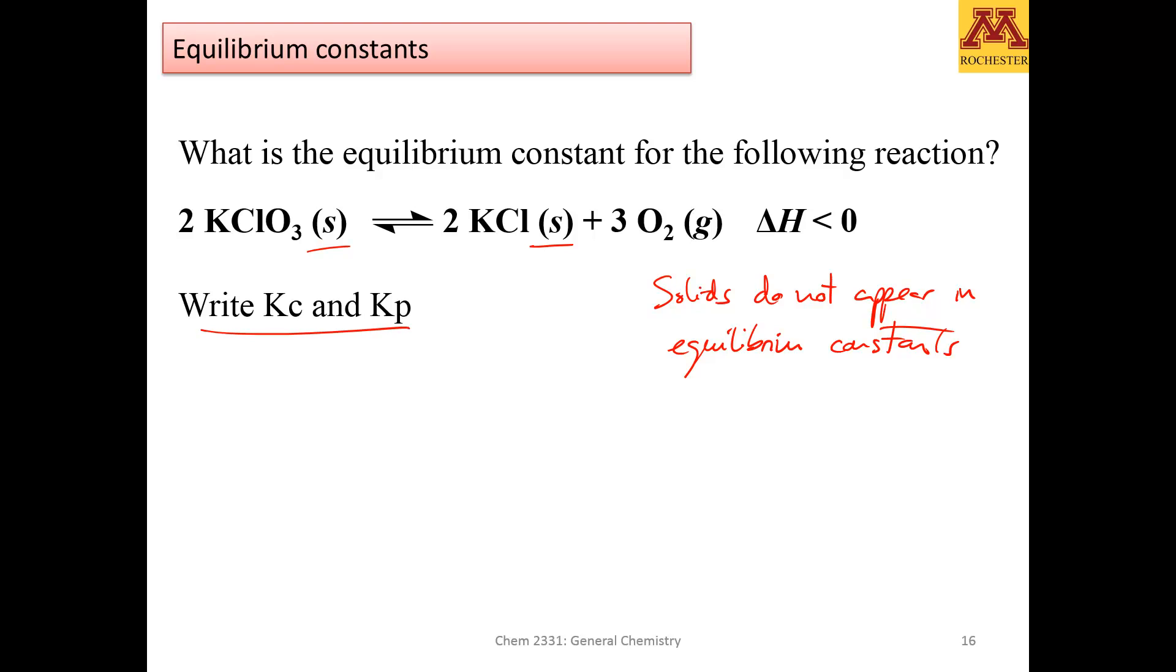So in this case, if we were to write Kc and Kp, Kc would be concentration of reactants over products. Again, products is just oxygen, third, divided by reactants, but notice that you have reactants here being in solid phase, therefore we're just going to put one. So you just do not include them. And the same for Kp, Kp will be the pressure of oxygen to the third.